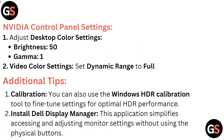NVIDIA Control Panel Settings: Under Adjust Desktop Color Settings, set Brightness to 50 and Gamma to 1. Under Video Color Settings, set Dynamic Range to Full. You can also use the Windows HDR Calibration Tool to fine-tune settings for optimal HDR performance.